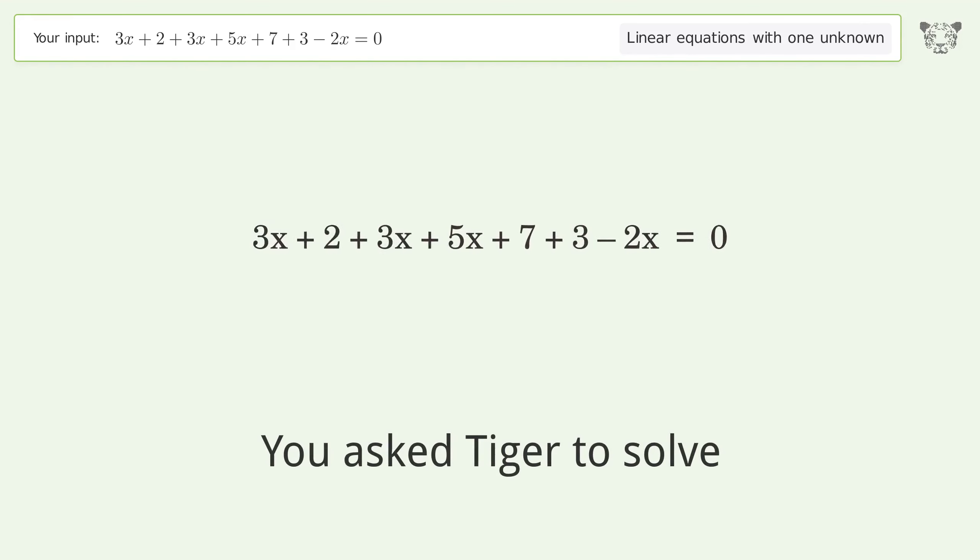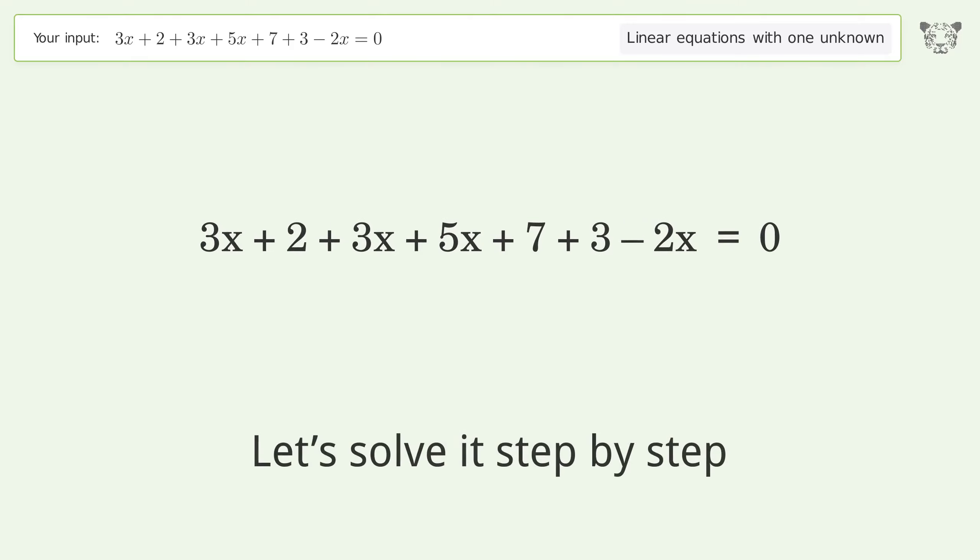You asked Tiger to solve this. It deals with linear equations with one unknown. The final result is x equals negative 4 over 3. Let's solve it step by step.